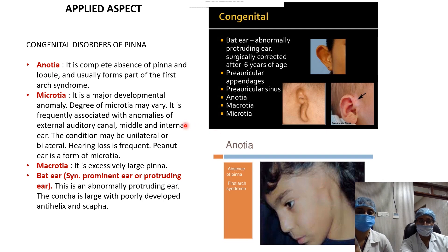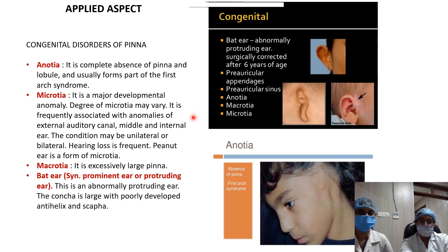Microtia is a major developmental anomaly with varying degrees of severity. It is frequently associated with anomalies of the external auditory canal and sometimes of the middle and inner ear. It may be unilateral or bilateral and is most often associated with hearing loss. Peanut ear is a form of microtia.